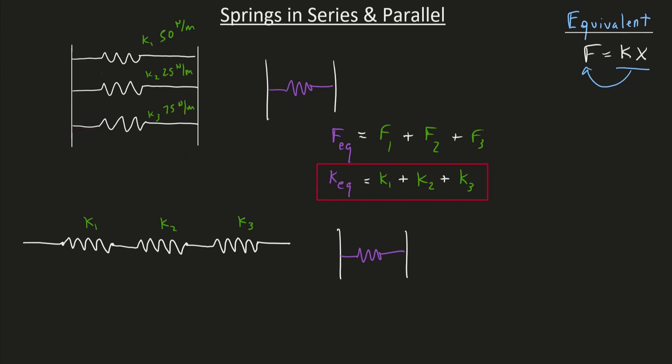So I know if I see some springs in parallel, I can just add up each of the stiffnesses to simplify this parallel system into one spring that acts the exact same. This spring right here, with the k value of 150, will stretch the same as our original system, and it will create the same force as our original system.